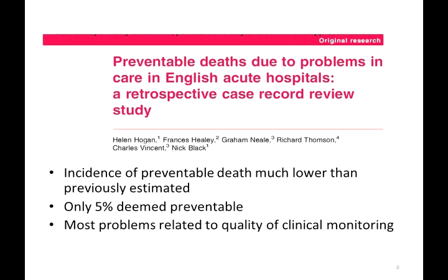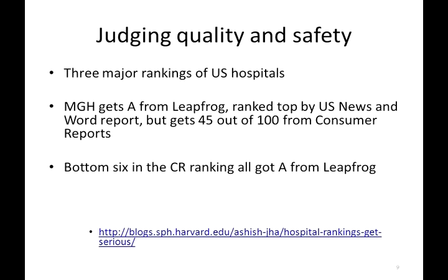Another problem is knowing how well we're doing — Hood's component of gathering information. In three major rankings of US hospitals, there is a lot of discordance between different ranking systems. Massachusetts General Hospital, for example, gets an A from Leapfrog and is ranked top by US News and World Report, but only gets 45 out of 100 from Consumer Reports. The bottom six hospitals in the Consumer Reports ranking all got an A from Leapfrog — telling us that you get very different rankings depending on what system of information you use, and it's very hard to determine which is best.